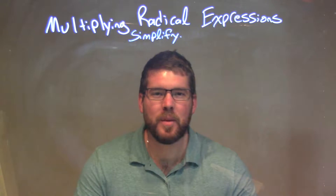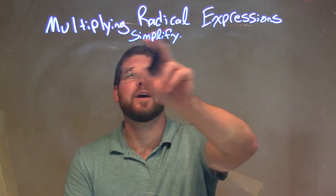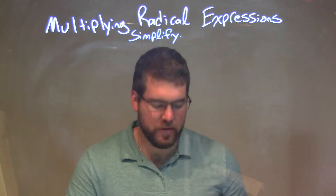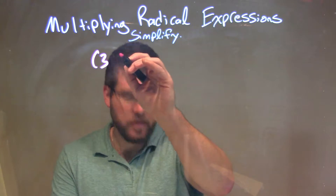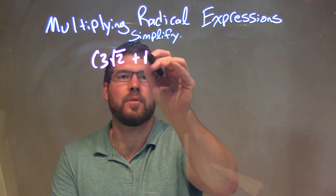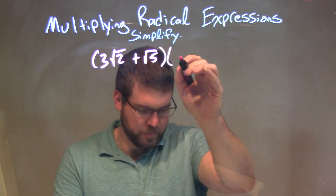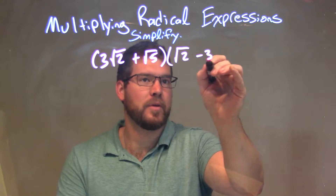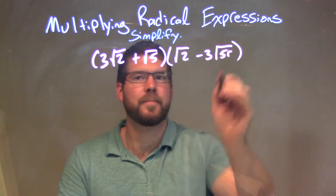Hi, I'm Sean Gannon, and this is MinuteMath. Today we're going to learn about multiplying radical expressions. So if I was given this expression: 3 square root of 2 plus the square root of 5, times the square root of 2 minus 3 square root of 5r.